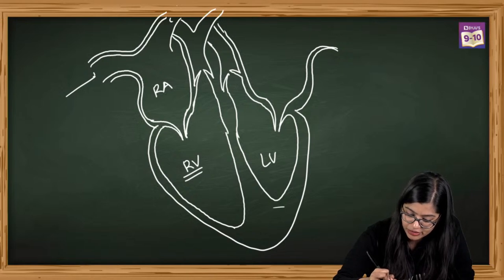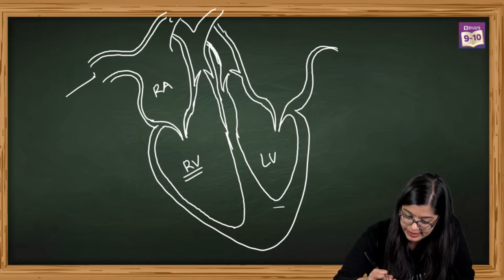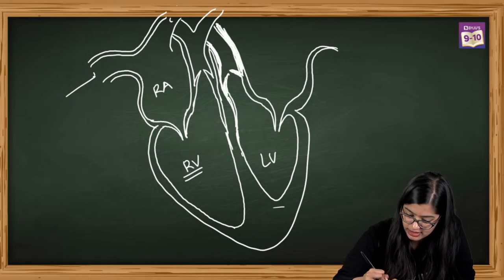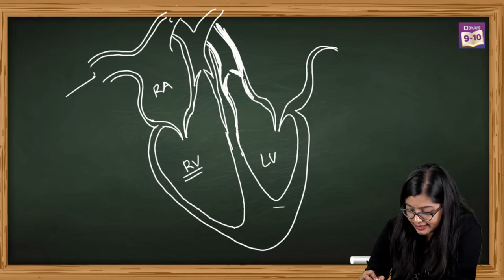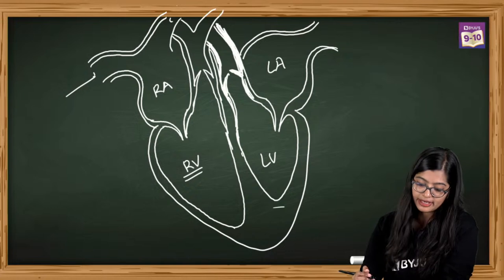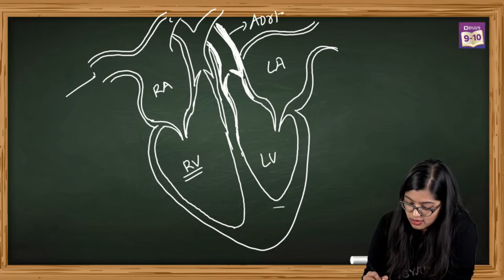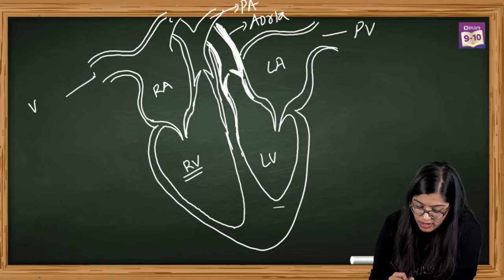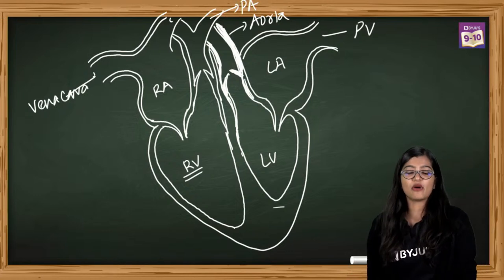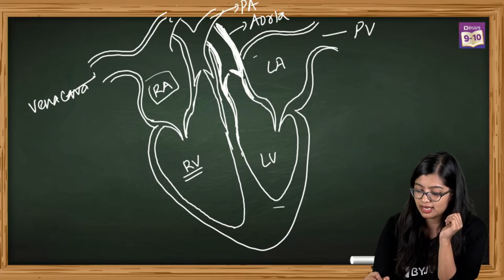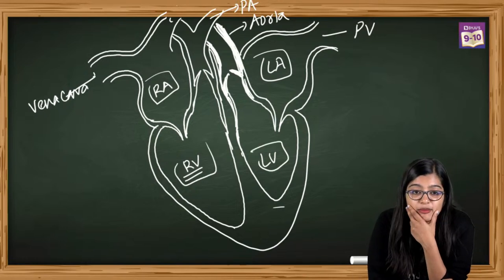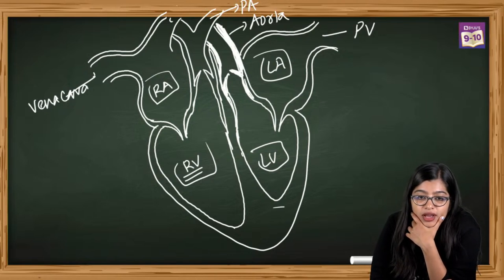Once you have the aorta, pulmonary artery, pulmonary vein, vena cava, and your four chambers - right atrium, left atrium, right ventricle, left ventricle - your heart diagram is complete. The septum is the wall separating the left and right sides of the heart. Double circulation is the next concept - the heart diagram becomes easy once you know this structure.